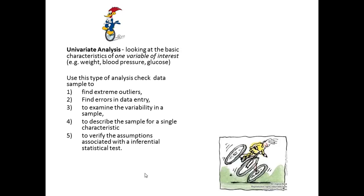In univariate analysis, we're looking at the basic characteristics of one variable of interest — weight, blood pressure, glucose. We use this type of analysis to check the data sample to find extreme outliers, find errors, examine the variability in a sample, describe the sample for a single characteristic, or to verify the assumptions associated with an inferential statistical test.